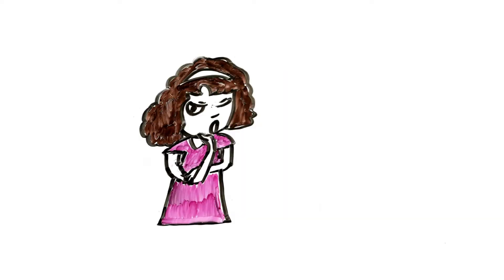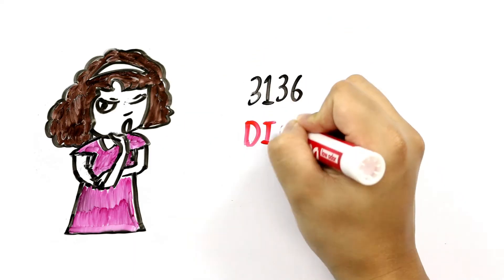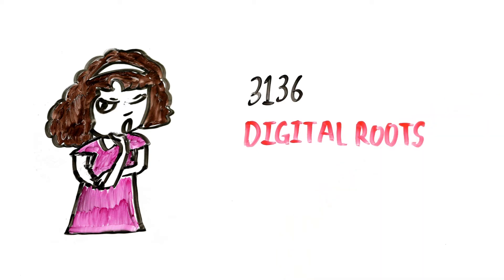Let's take a number 3136. Its digital root will be 3 plus 1 plus 3 plus 6, which is 13.